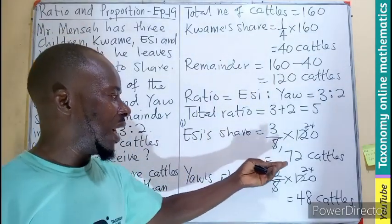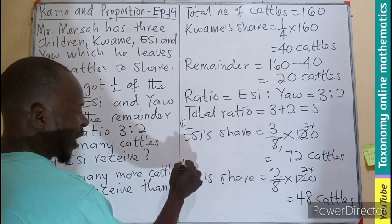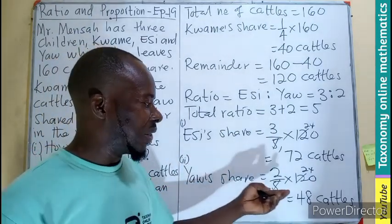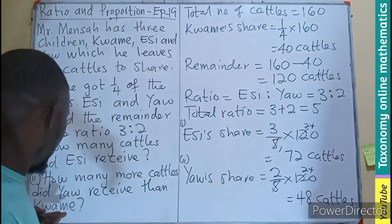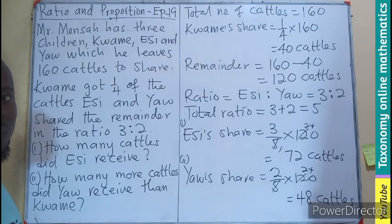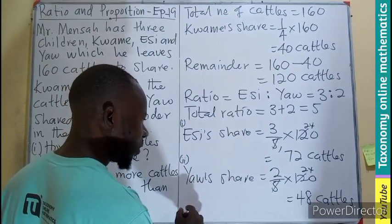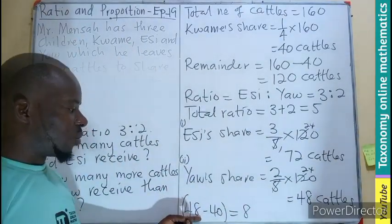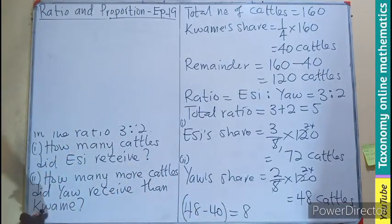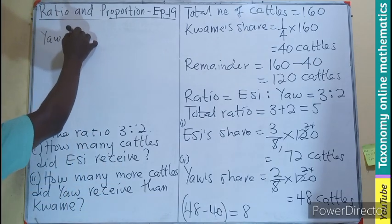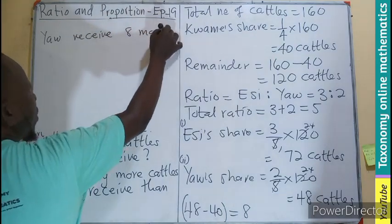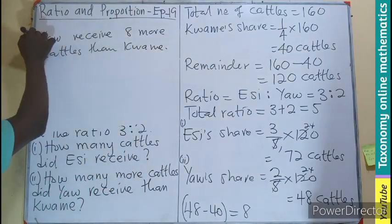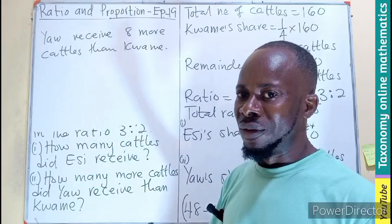For the second question — how many more cattle did Yam receive than Kwami — we compare Yam's 48 cattle with Kwami's 40 cattle. We calculate 48 minus 40, which gives us 8. So Yam received 8 more cattle than Kwami. That is the final answer for the second question.